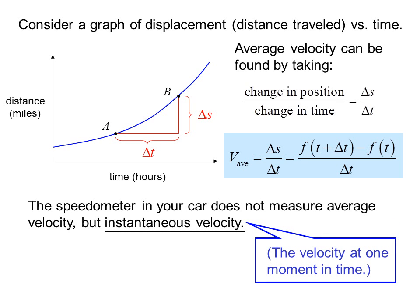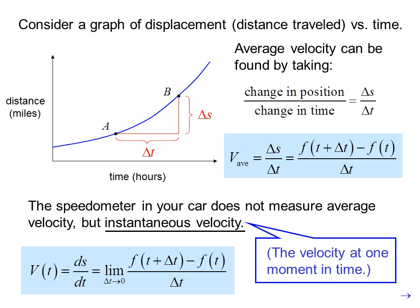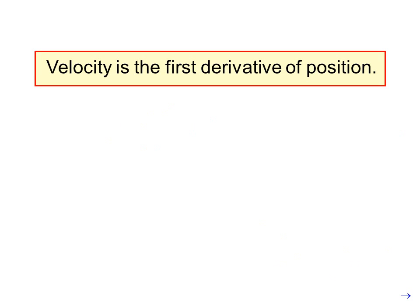The speedometer in a car does not measure average velocity, but instantaneous velocity, the velocity at one moment in time. V of T equals dS dt equals the limit as delta T goes to zero of F of T plus delta T minus F of T over delta T. Velocity is the first derivative of position.